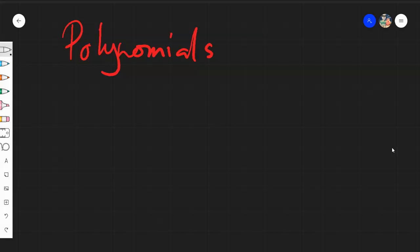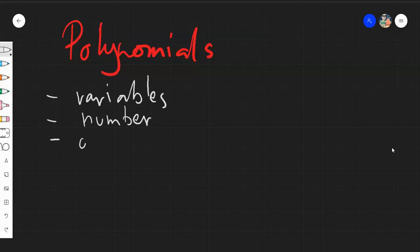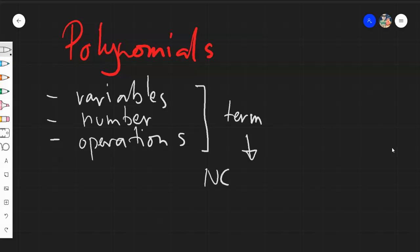Remember that we have discussed algebraic expressions. These are expressions with variables, numbers, and operations combined together creating a singular term. In each term, the composition involves two things: the numerical coefficient and the literal coefficient.